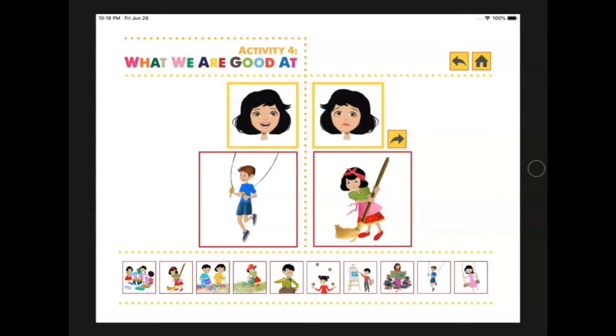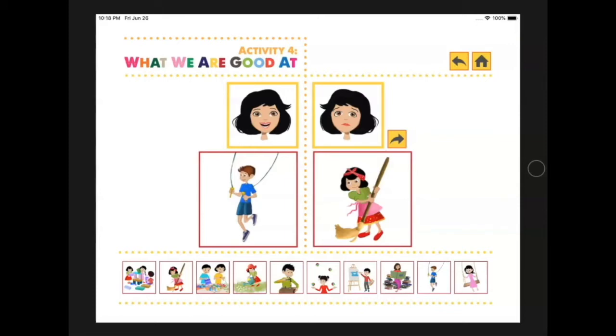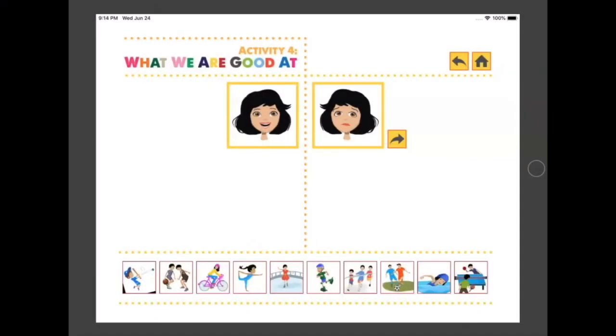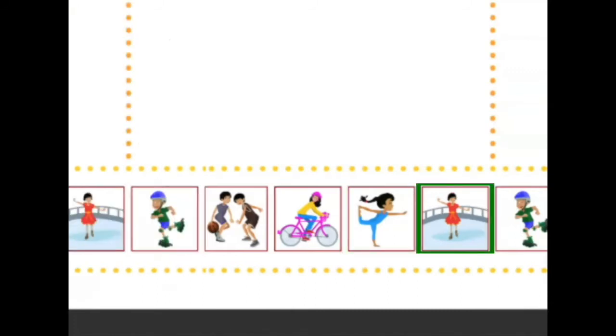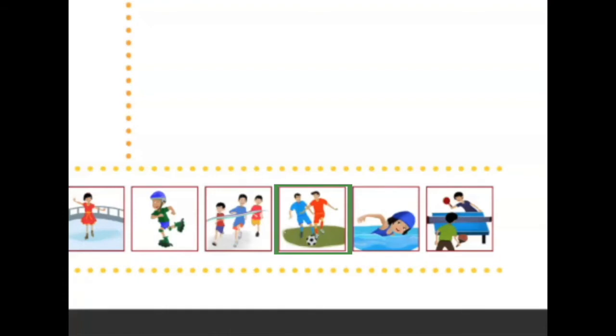Let's see what our next category is. Now let's look at the pictures of sports. Here we have baseball, basketball, biking, gymnastics, skating, rollerblading, running, soccer, swimming, and table tennis.